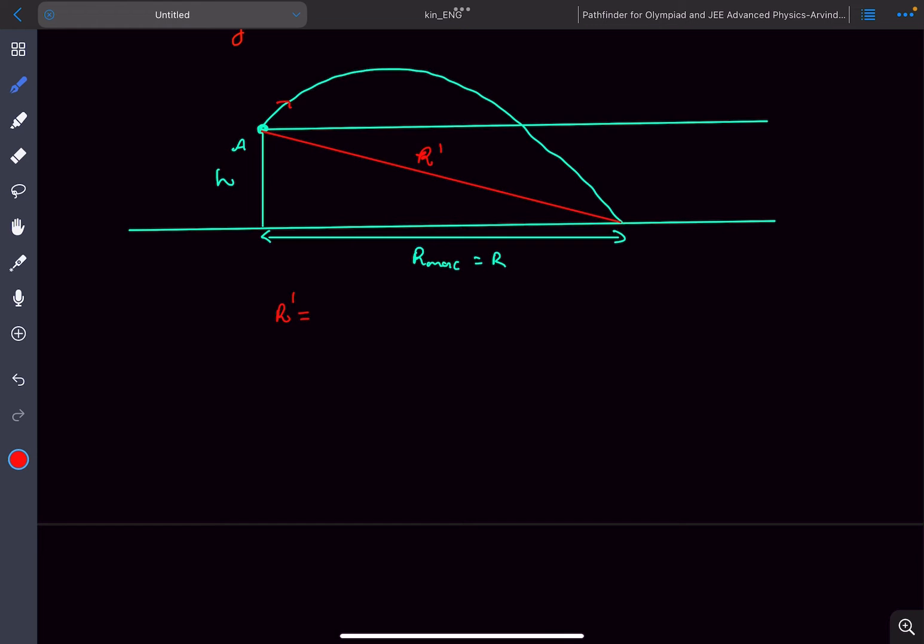The maximum value of the range in an inclined plane projectile projected down the plane is given by u²/g(1 - sin α). If you don't know this result, you have to take general θ, find range as a function of θ, and then differentiate it.